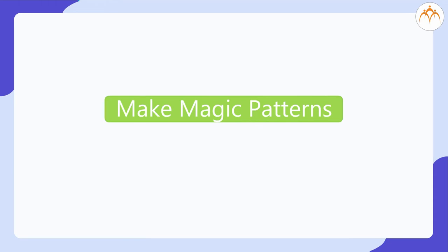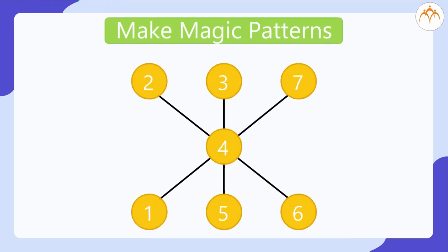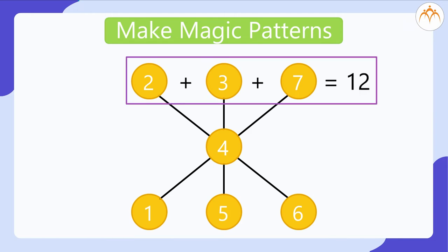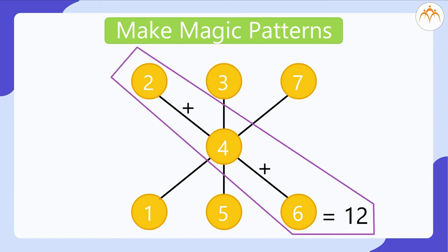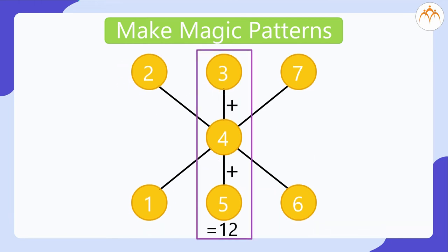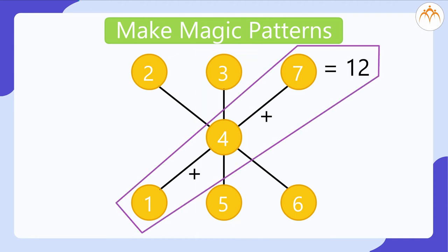Make magic patterns. Look at the pattern of the numbers. Total numbers 1 to 7. See how each line adds up to 12. 2 plus 3 plus 7 add up to 12. 1 plus 5 plus 6 add up to 12. 2 plus 4 plus 6 add up to 12. 3 plus 4 plus 5 add up to 12. 1 plus 4 plus 7 add up to 12.